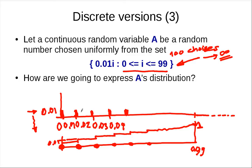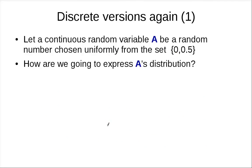Now let's divide the segment into something smaller — say 10 pieces. The length of each strip is 0.1. If the y-axis represents density of 1, then the mass in one strip is 1 times 0.1, which is 0.1. The key insight is that with the density interpretation, the y-axis remains 1 throughout, even as we divide into more strips.